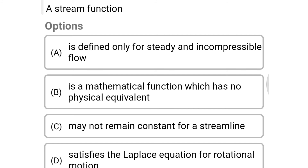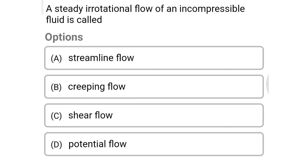Next question: a stream function — Option A: is defined only for steady and incompressible flow. Option B: is a mathematical function which has no physical equivalent. Option C: may not remain constant for the streamline. Option D: satisfies the Laplace equation for rotational motion. The correct answer is Option A, defined only for steady and incompressible flow.